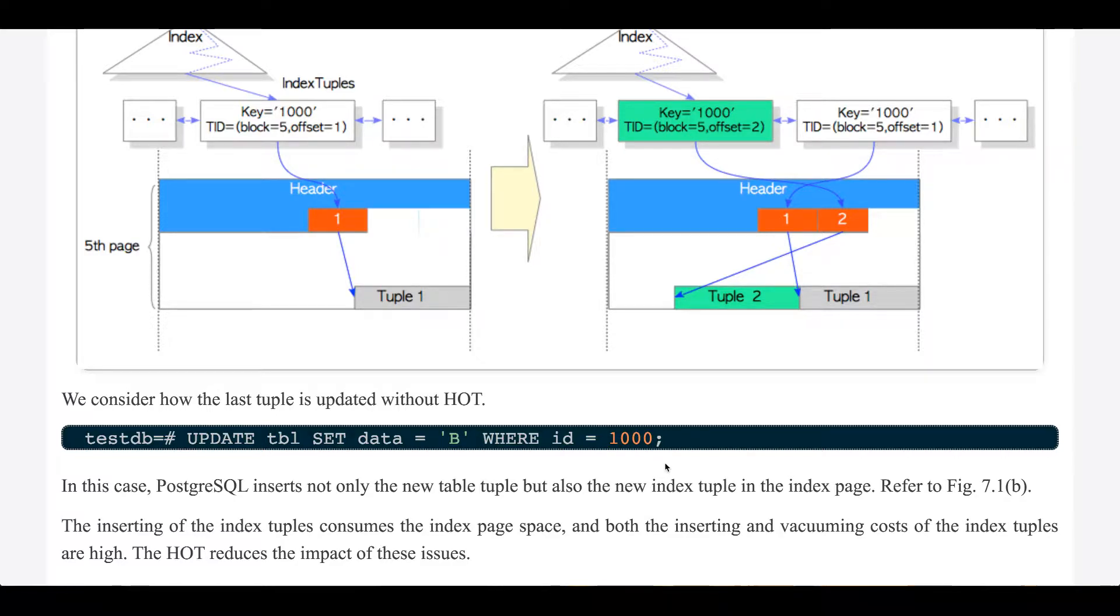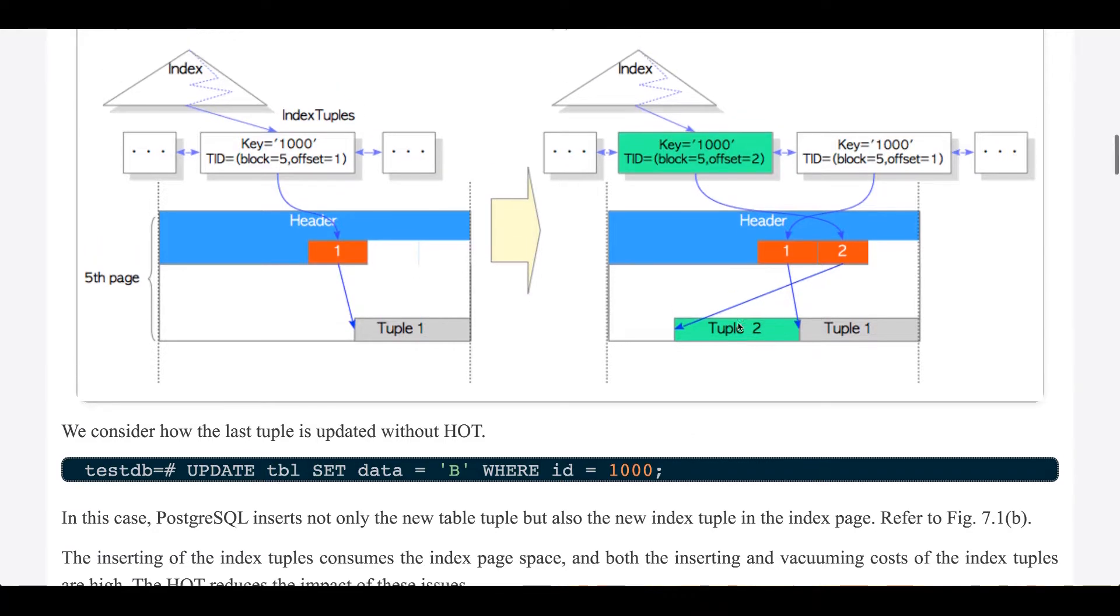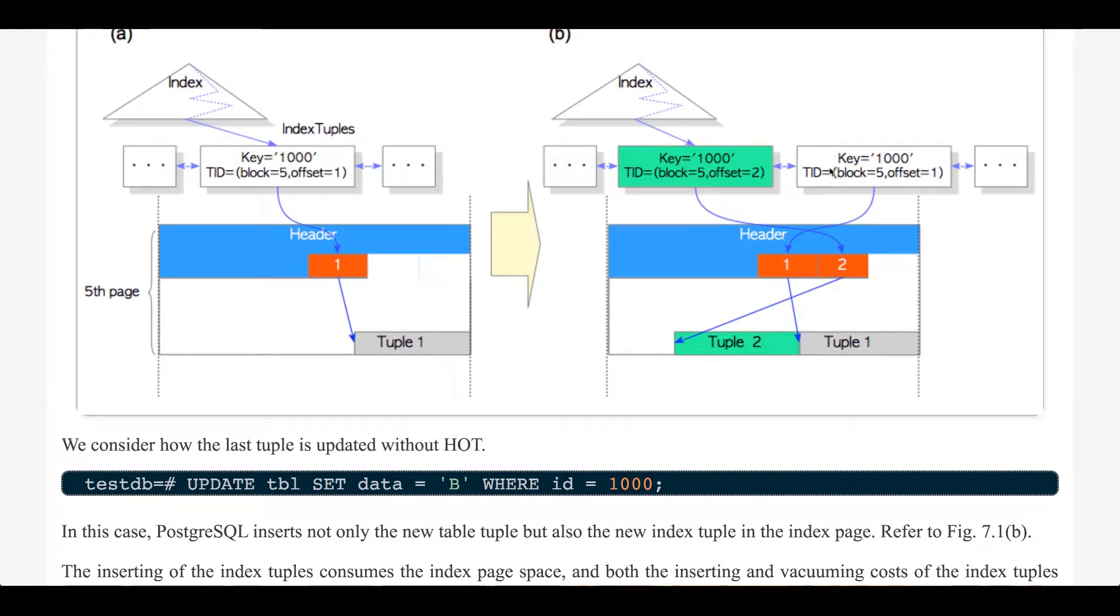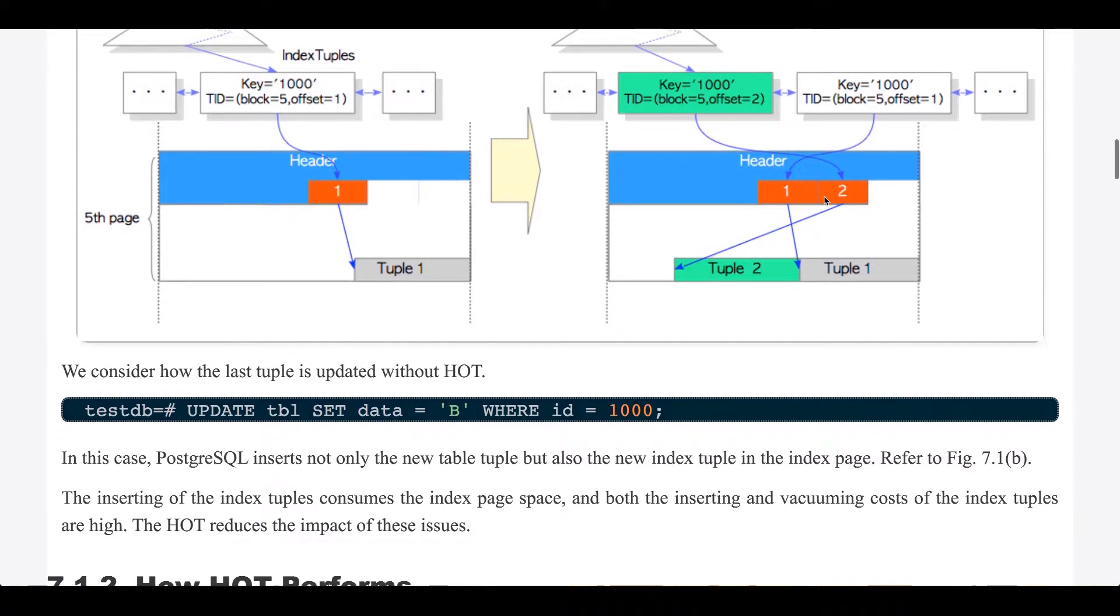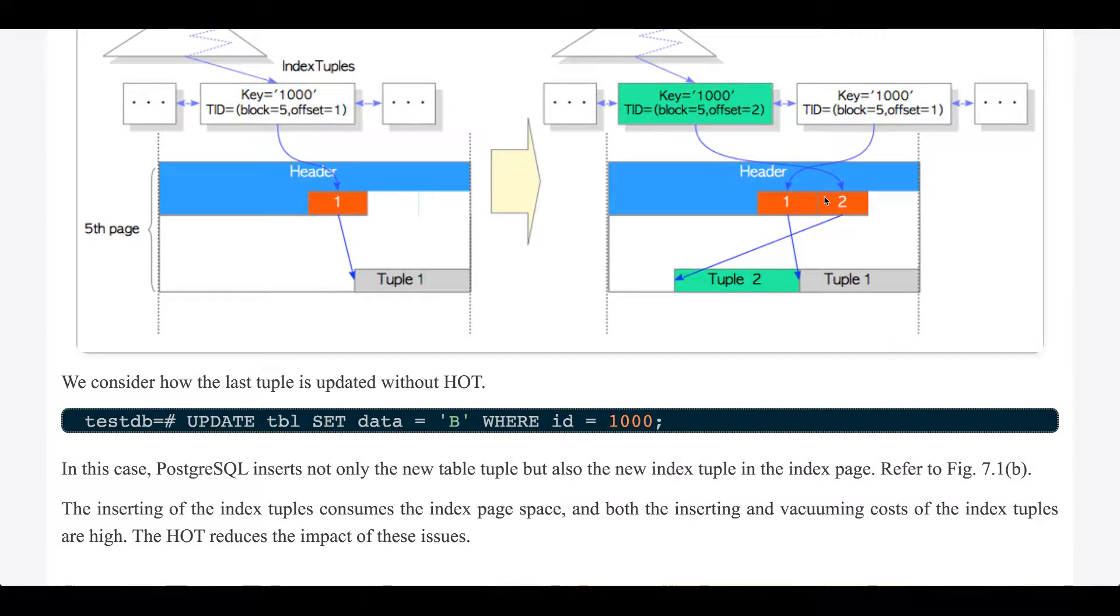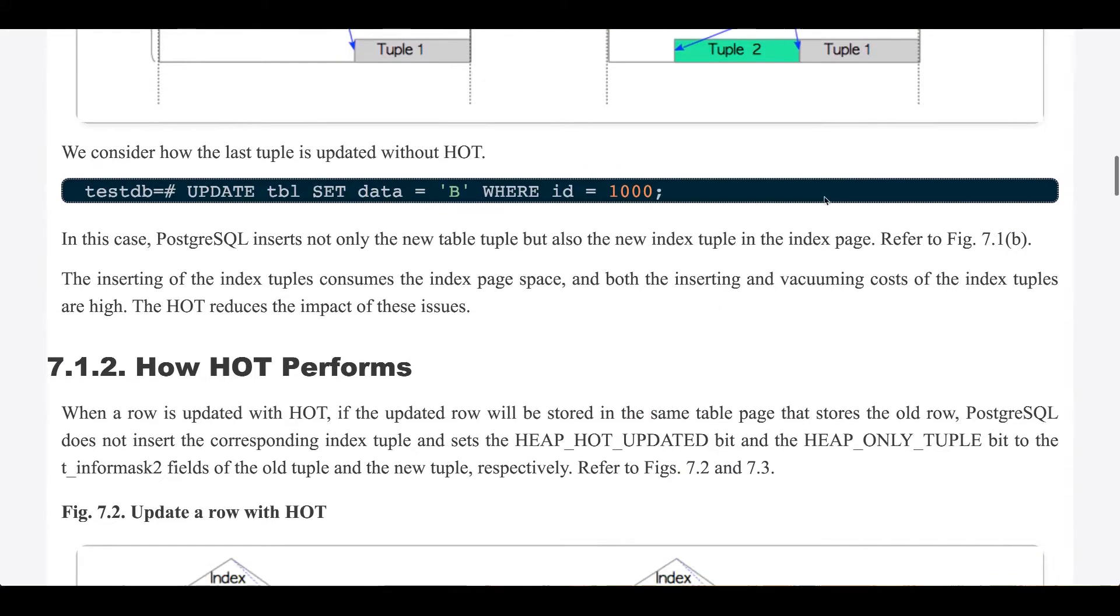In this case, Postgres inserts not only the new table tuple, but also the new index tuple in the index page. The inserting of the index tuple consumes the index page space, and both the inserting and vacuuming costs of the index tuples are high. The HOT reduces the impact of these issues.